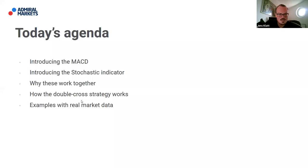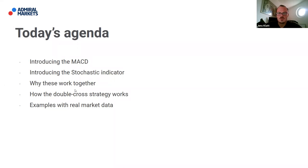First, we want to introduce the MACD and the stochastic — give an idea of what's behind those two indicators, even though we don't want to dig into the formulas they're calculated on. We still want to give a short, quick explanation of what they aim to capitalize on, and also why these two indicators work very well with each other. One is a momentum-based indicator, the other is good for trending markets.